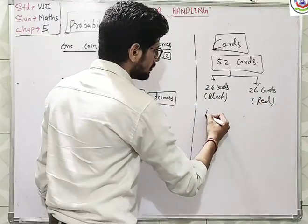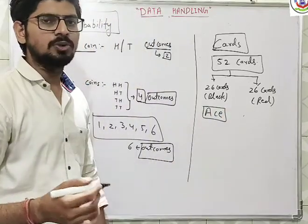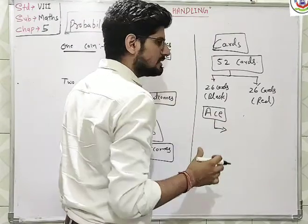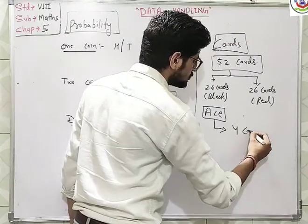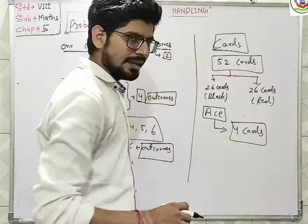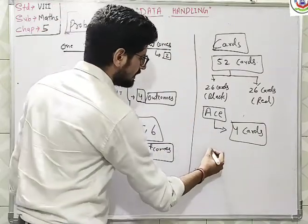26 cards are black and 26 cards are red in colors. Generally, you must have knowledge about Ace. How many Ace cards are there? Total Ace cards are four cards, in which two cards are black.